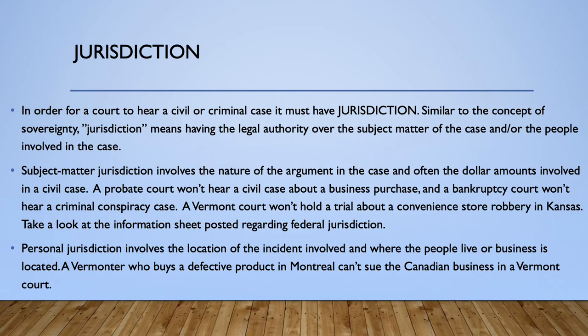We mentioned jurisdiction in an earlier lecture relative to sovereignty. In order for a court to hear a civil or criminal case, it must have jurisdiction — the legal authority over the subject matter of the case and/or the people involved. Subject matter jurisdiction involves the nature of the argument in the case, what's at dispute, and what the dollar amounts are. For example, a probate court won't hear a lawsuit about a business purchase, a bankruptcy court won't hear a criminal conspiracy case, and a Vermont court won't hold a trial about a convenience store robbery in Kansas.